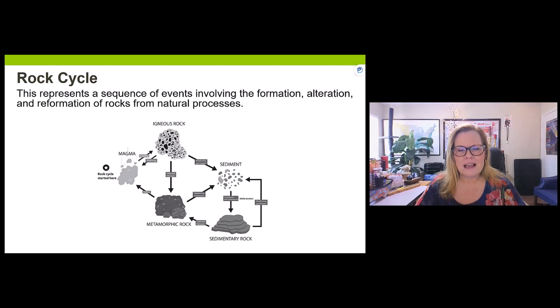As we journey through the rock cycle, we'll start with minerals, then move into igneous rocks, sedimentary rocks, metamorphic rocks, then fossils. There are three major rock types, and they're all interrelated, but they had to start somewhere.